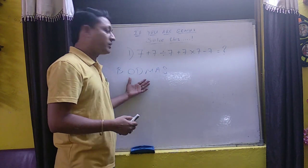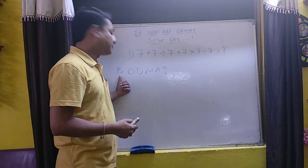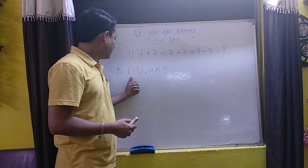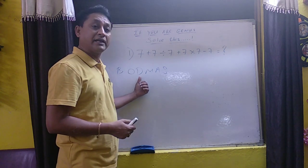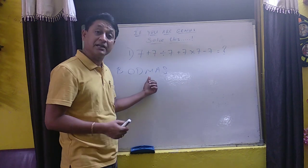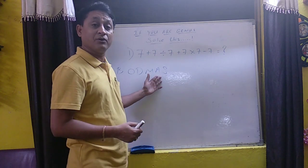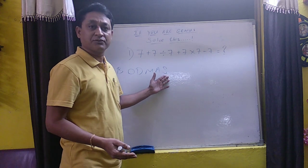In BODMAS rule, what does the BODMAS rule say? B stands for bracket, O stands for order, D stands for division, M stands for multiplication, A stands for addition and S stands for subtraction.